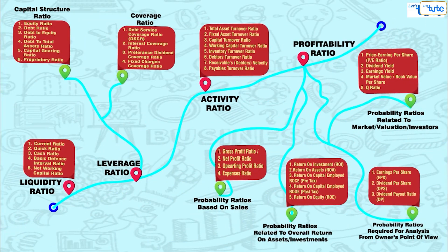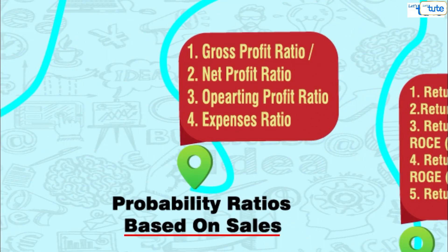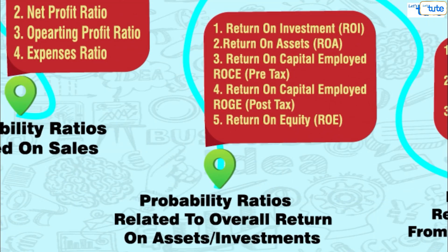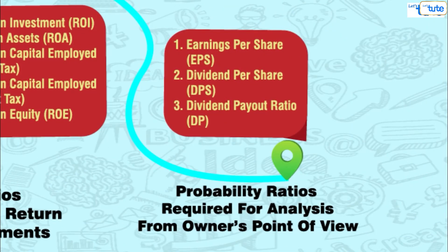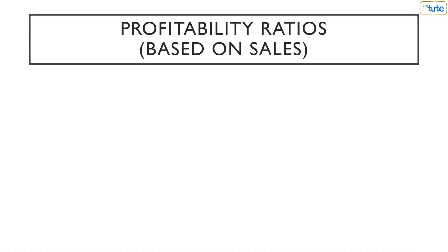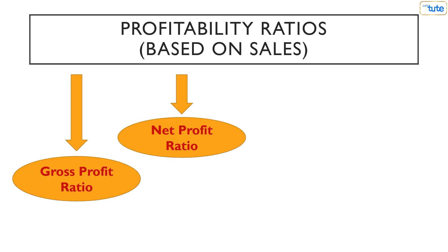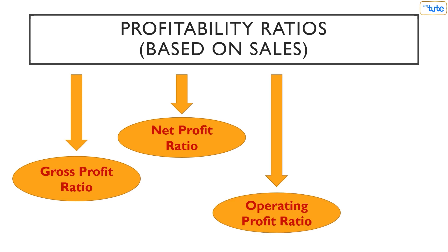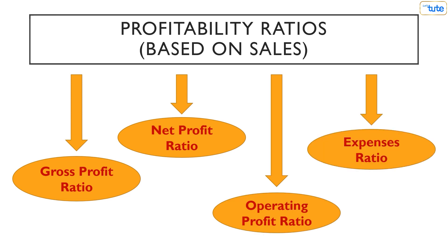Profitability ratios are broadly classified into four categories: profitability ratios related to sales, related to return on assets or investments, required for analysis from the owner's point of view, and related to market or valuation or investors. In today's session, we are going to learn about profitability ratios related to sales, where we will understand and analyze gross profit ratio, net profit ratio, operating profit ratio and expenses ratio. So let's start with the first one — gross profit ratio.